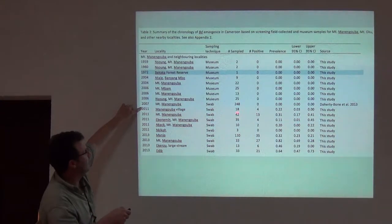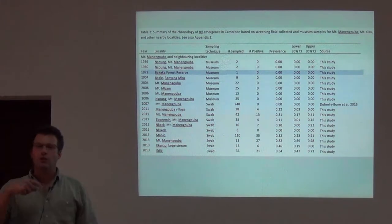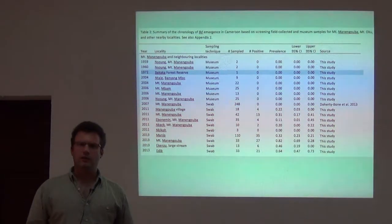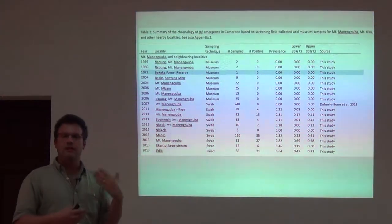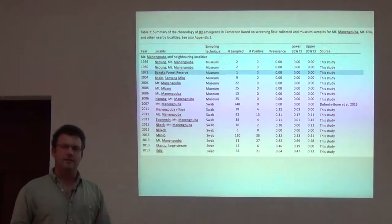But suddenly in 2011, which admittedly is a few years later, in 2011 we find every time we look for chytrid we find it. And so we think in this landscape we've seen chytrid emerge, and it seems to be that these populations are declining at the same time.